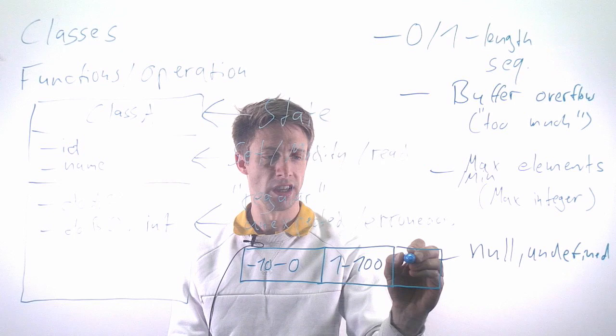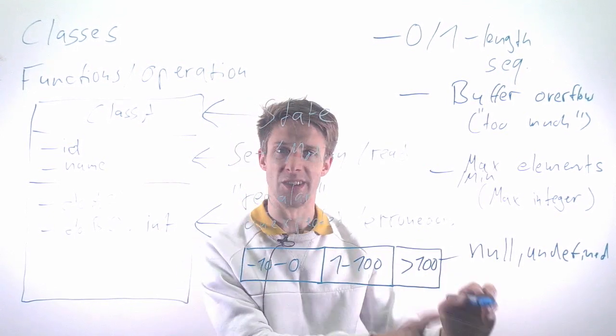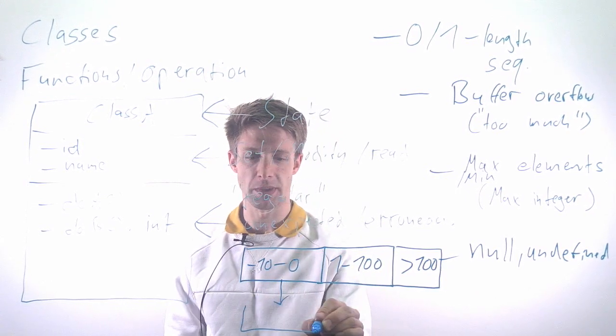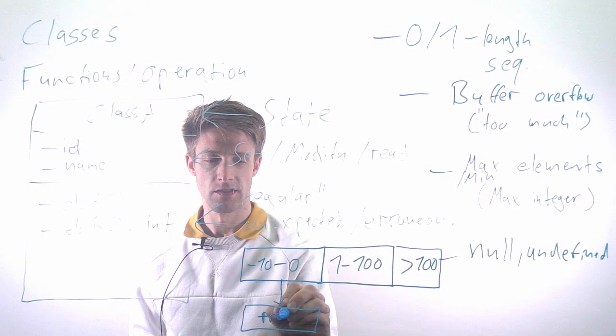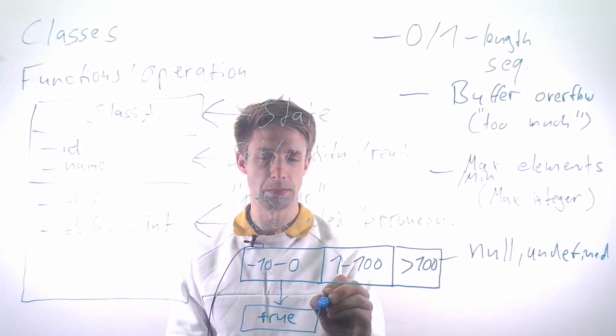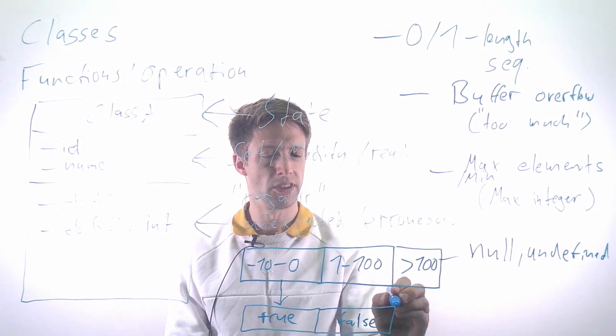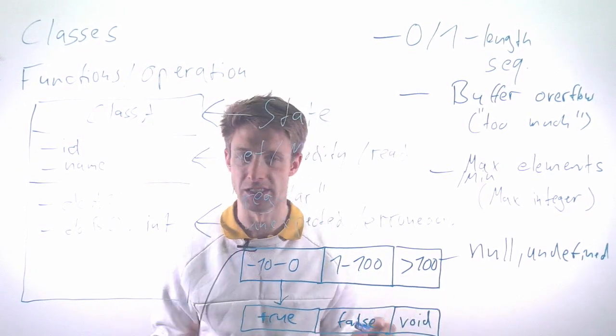You expect three different outputs. For this range, you expect the return value will be true. For this, it will be false. And here you actually get something like void—you might get an exception or something else, depending on the programming language.